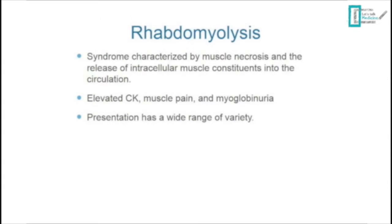Rhabdomyolysis is a syndrome characterized by muscle necrosis and release of intracellular muscle constituents into the circulation. This definition gives a brief picture of the pathophysiology. Key features include elevated creatinine kinase, muscle pain, and myoglobinuria. The presentation is very wide, ranging from simple to life-threatening conditions.